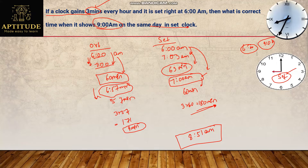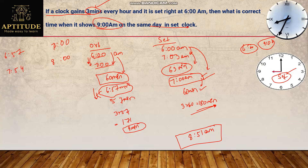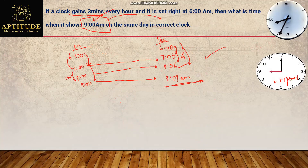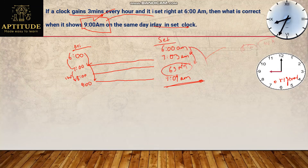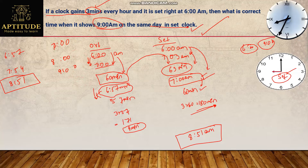For every hour shown on the set clock, the original clock loses 3 minutes. So if set clock shows 7, original is 6:57; if set clock shows 8, original is 7:54; if set clock shows 9, original is 8:51. We can also think of it as: every 63 minutes on the set clock equals 60 minutes on the original. This reverse pattern may seem confusing but becomes clear with practice. Most exam problems give the set clock time and ask for the original.